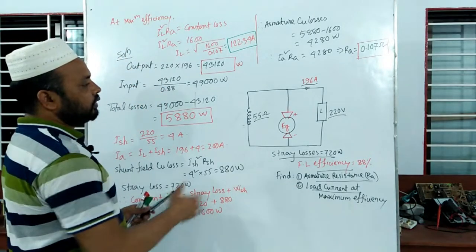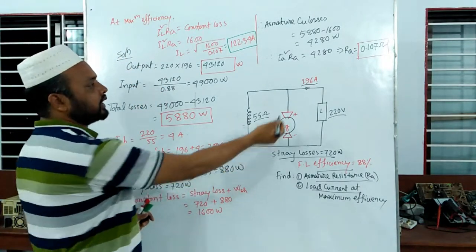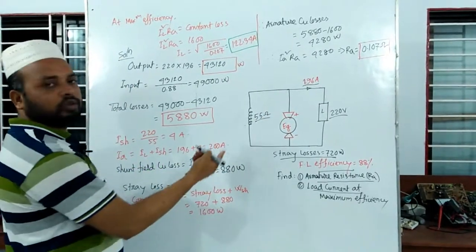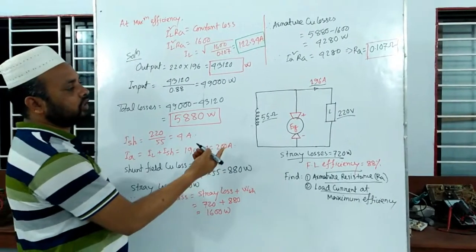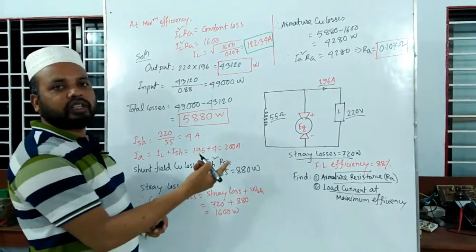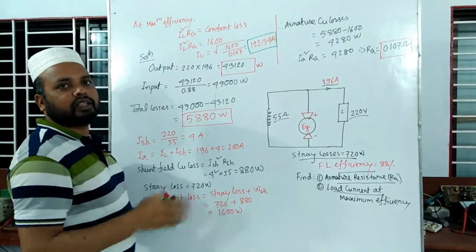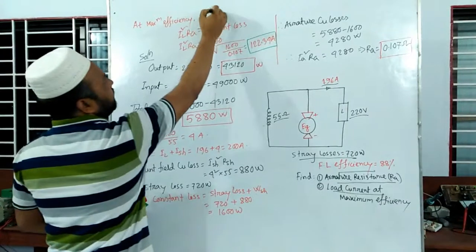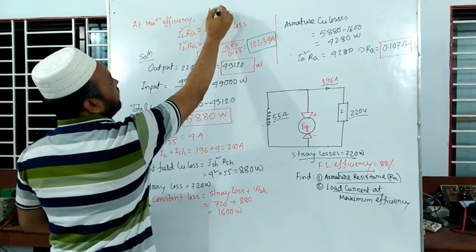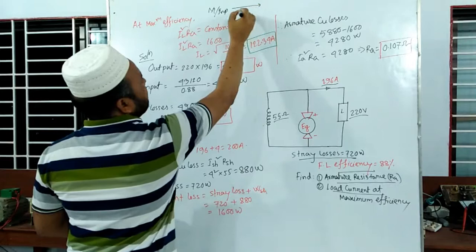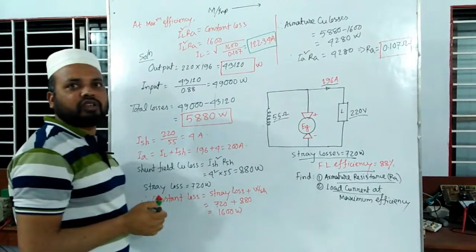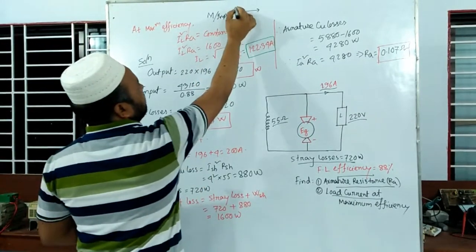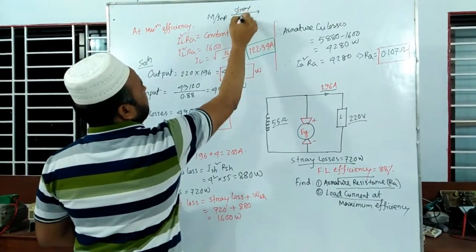We have to go to the data and take data from it. The solution is to refer to the loss diagram shown in the previous video. In this area, there are iron and friction losses, magnetic and mechanical losses, and extra losses.